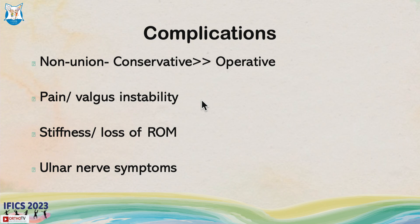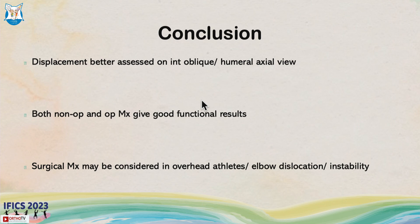Complications include non-union, which occurs more often with conservative than operative treatment, though functional results may still be good even with non-union. Other complications include pain, valgus instability, stiffness, loss of range of motion, and ulnar nerve symptoms.